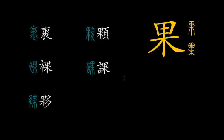Hello everyone and welcome to another video about Chinese character etymology and phonetic series. In this video I'm going to talk about the phonetic series where the title phonetic element is the character pronounced 果 (guǒ), and it means fruit.